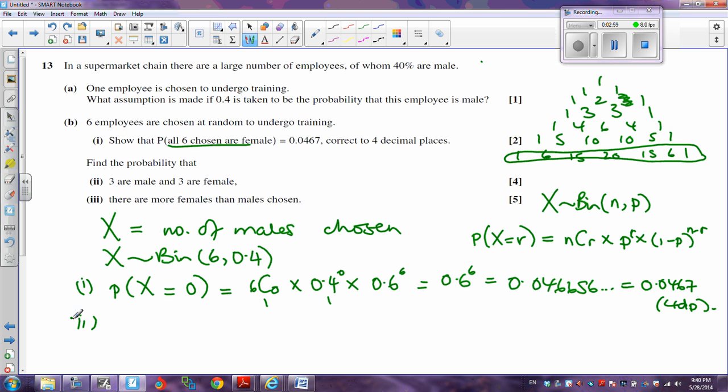The second part then says, what's the probability that 3 are male and 3 are female? Well that's just the probability that 3 are male. So we want the probability that X is equal to 3. Now you can either use 6C3 or you could use Pascal's triangle and it goes 0, 1, 2, 3. Either way it comes out as 20. And then that's times 0.4 to the power 3, times 0.6 to the power 3. And if you multiply that all together we get 0.27648, which to 4 decimal places is 0.2765.